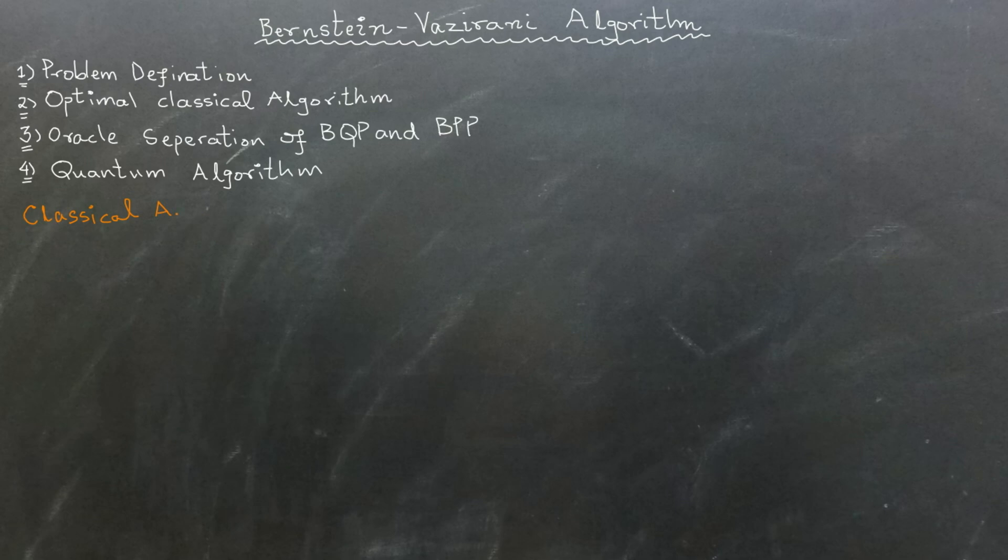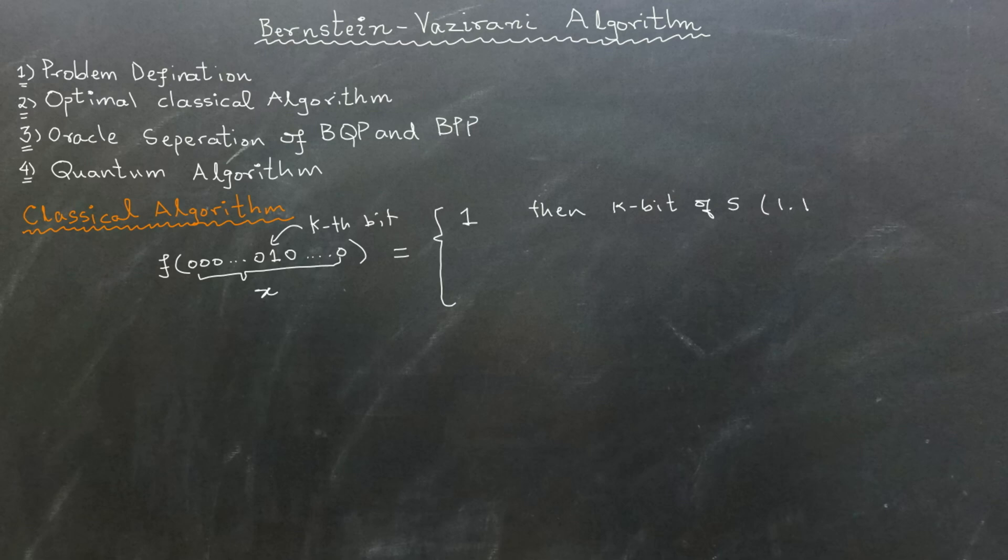Now let's describe the optimal classical algorithm. Classically, this problem can be solved by sending n different inputs to the oracle. In each input, exactly one bit, say the kth bit, will be 1 while the rest of the bits will be 0. If the output is 1, it implies that the kth bit of s is also 1, because only 1 AND 1 equals 1. Otherwise, the kth bit of s must be 0. Here is a simple example to demonstrate the working of this classical algorithm.